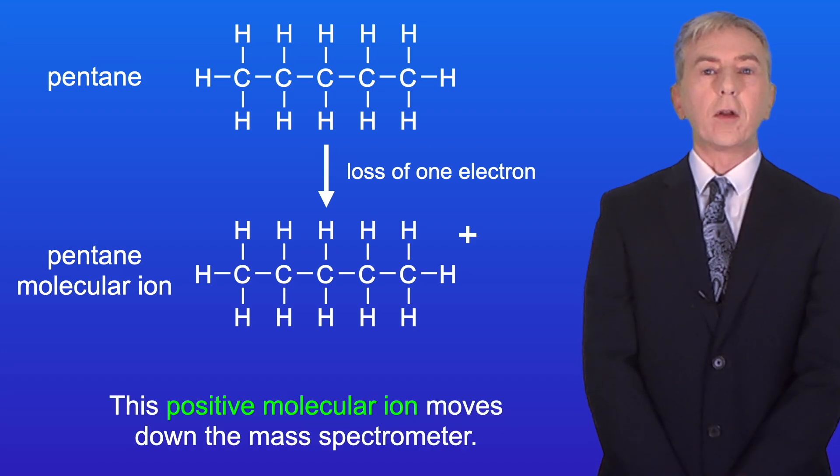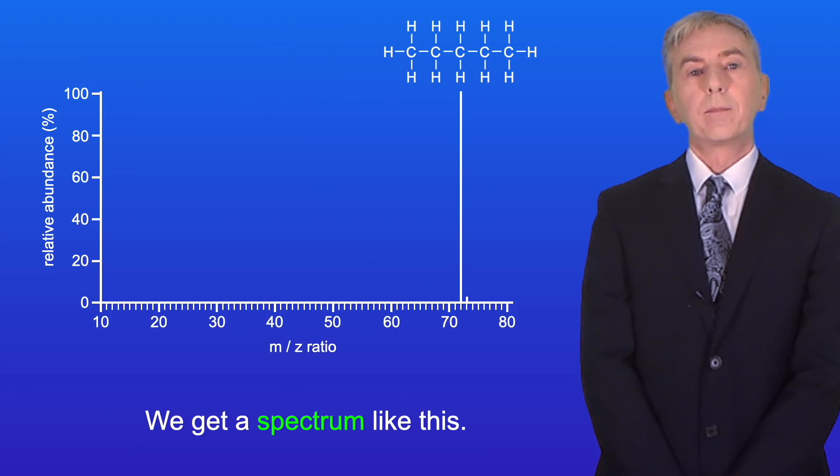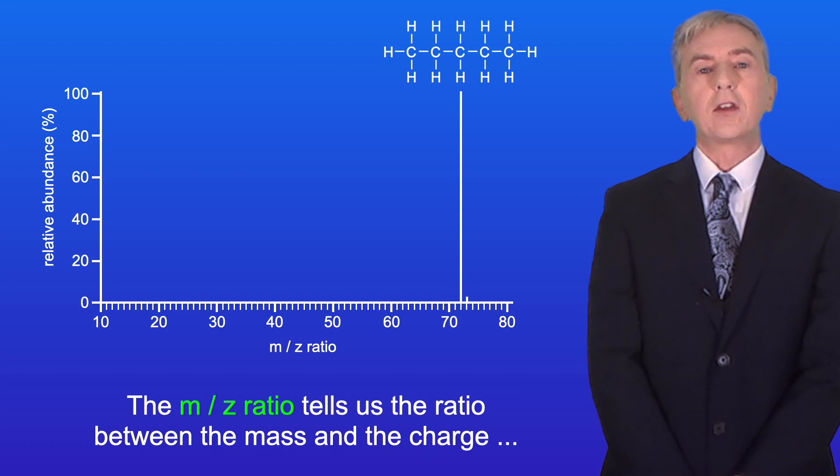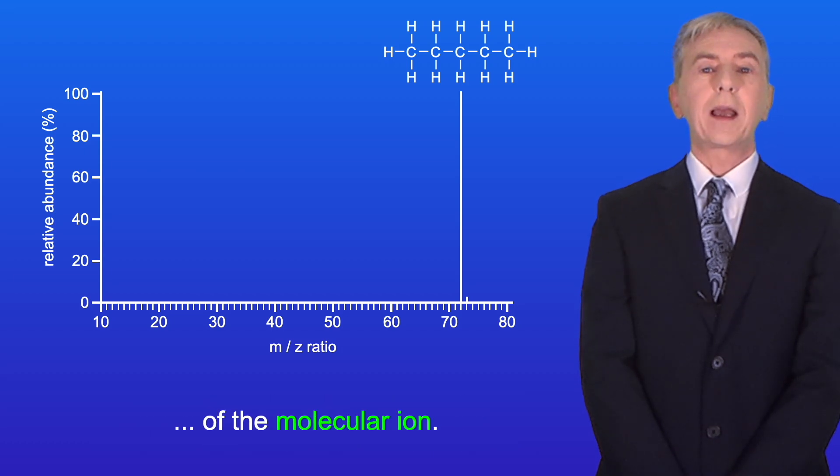This positive molecular ion moves down the mass spectrometer and we get a spectrum like this.